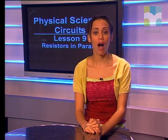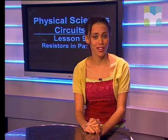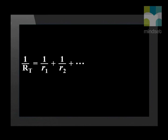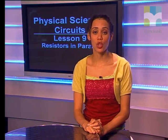Bruce has shown us that current divides in a parallel circuit while the voltage remains the same. We also need to know how to calculate the resistance in a parallel circuit. The formula we use to calculate the total resistance in a parallel circuit is: 1 over R total equals 1 over R1 plus 1 over R2, where R1 and R2 are the values of the resistors in parallel. The total resistance is also called the effective resistance.